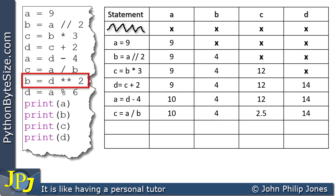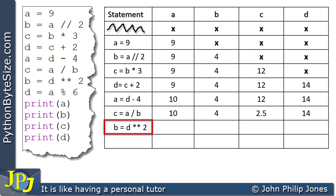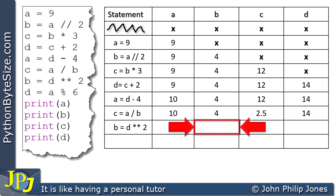We go on to the next program statement. Two asterisks — when there was one we knew it was multiplication, but two asterisks means raised to the power. So here we have D raised to the power of 2, i.e. squaring D. D has the value of 14, so it's 14 squared, which is 14 times 14, giving 196. This result is stored in B, so we place 196 in the B column. Variables A, C, and D are not affected, so we copy those values down.